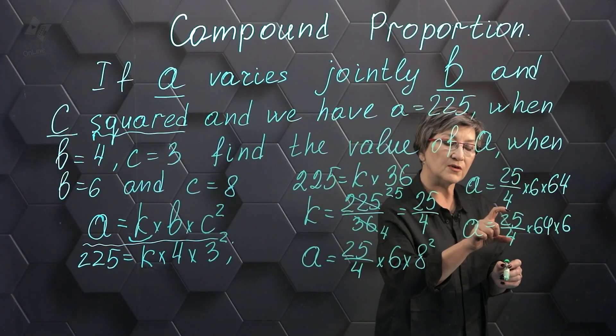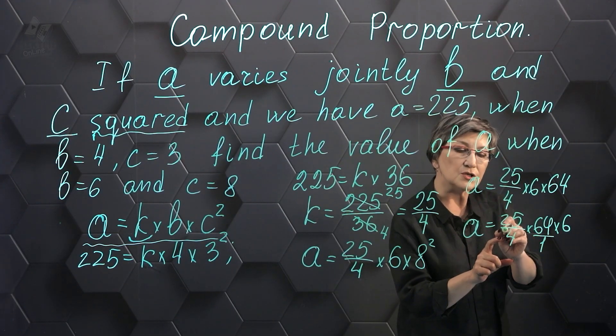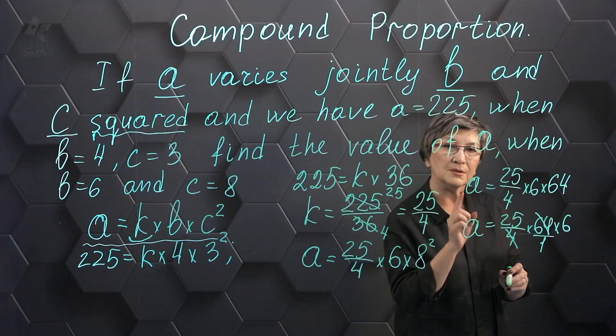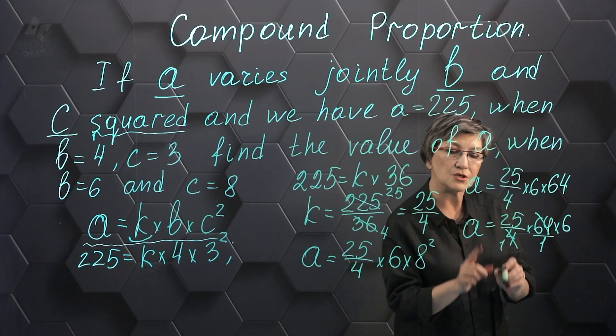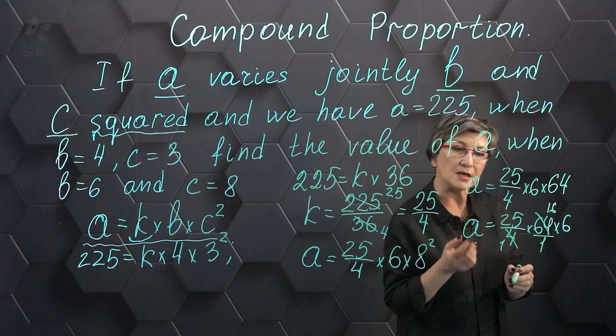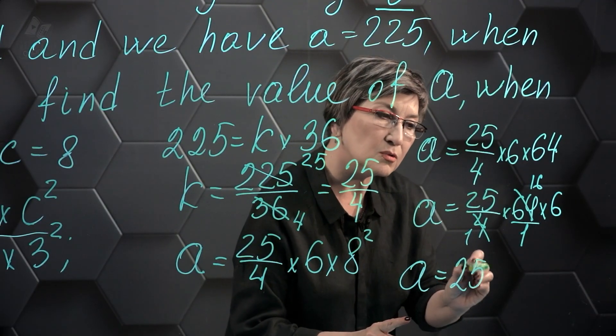We can multiply 25 fourths by 64 first. 4 and 64 divide by 4: 4 divided by 4 is 1, 64 divided by 4 is 16. a equals 25 times 16 times 6.